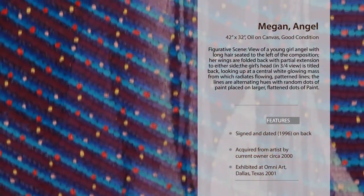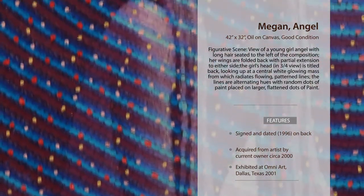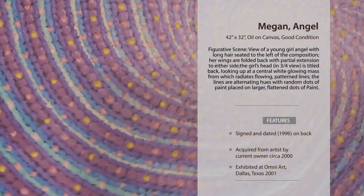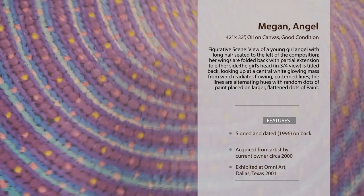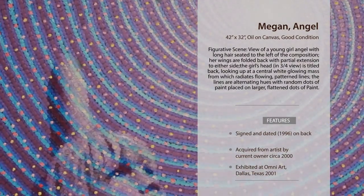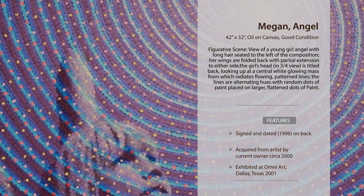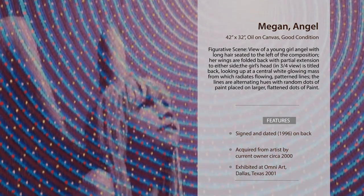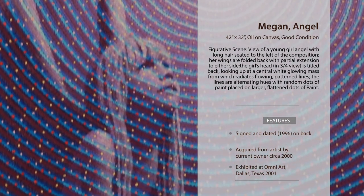His first major influence was Daryl Dishman, noted watercolorist and landscape painter who resided in Joplin, Missouri. Christian studied, worked, and interacted with Dishman for two years until the early 1970s. He then enrolled at the Portrait Institute of New York, where his style and technique evolved under the gifted instruction of John Howard Sandin.